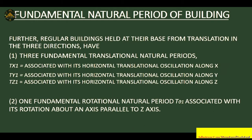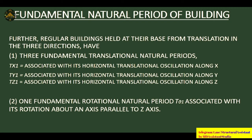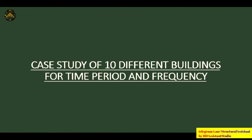The fundamental natural period of a regular building, held at its base, includes three fundamental translational natural periods corresponding to the three axes considered in structural design — horizontal translational oscillation along X, along Y, and along Z. There is also one fundamental rotational natural period associated with an axis parallel to the Z axis. We will now study 10 different buildings with different time periods and frequencies.